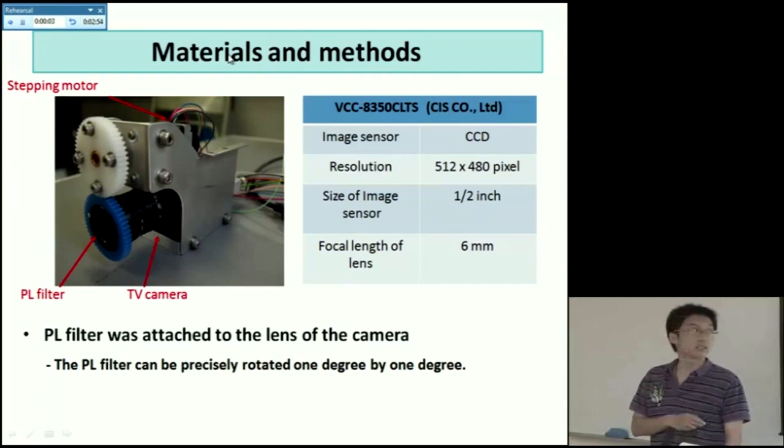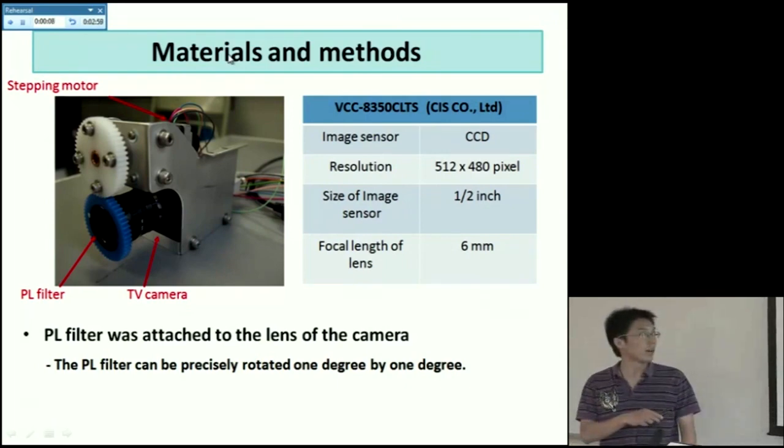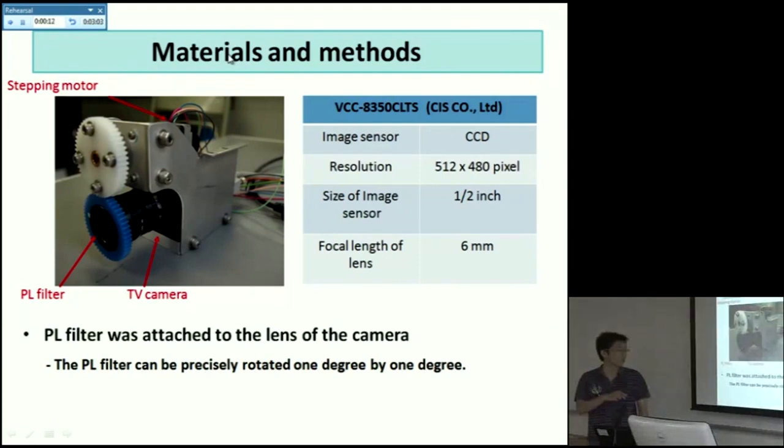This is the device I'm using to take images. This is a TV camera. And in front of the camera lens, there is a PL filter attached with a blue gear. Above the camera, there is a stepping motor. A white gear is used to connect the stepping motor with the PL filter. So by this way, the PL filter can be precisely rotated one degree by one degree. So we can take the images with different rotational angle.